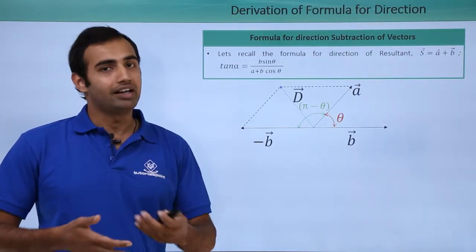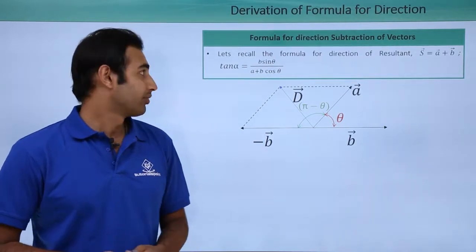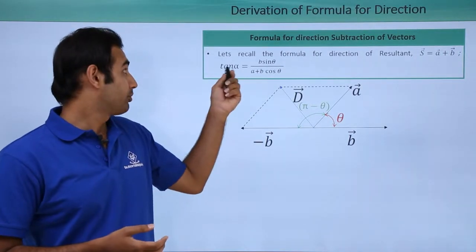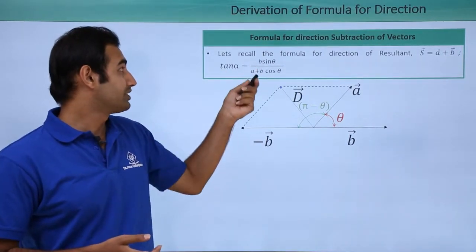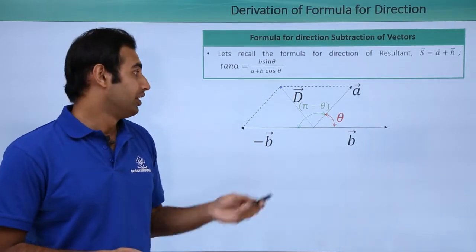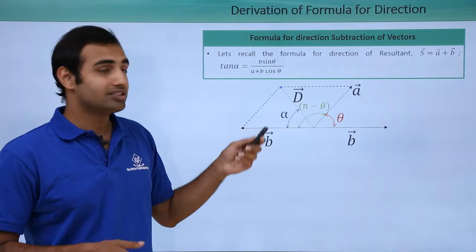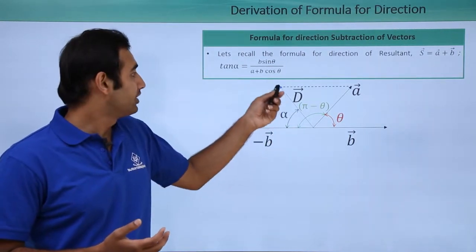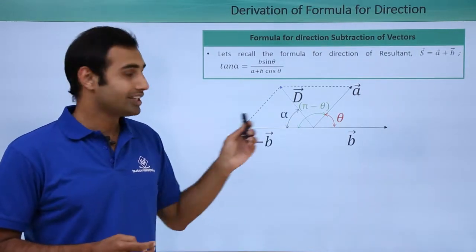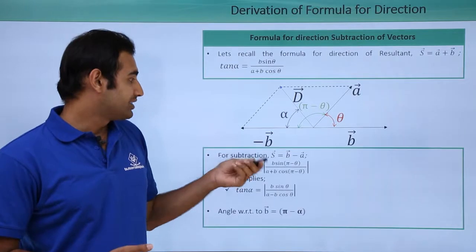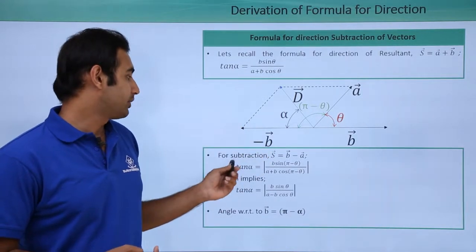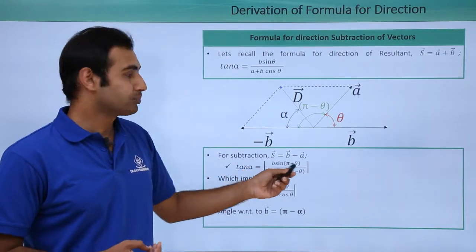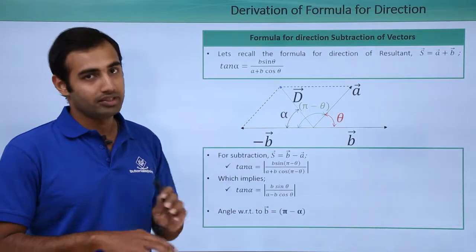Now let's talk about the direction of the resultant vector that comes out of subtraction. Once again, looking at the direction that we obtained when two vectors are added was given by tan α = (b sin θ)/(a + b cos θ). Now in this situation, the angle α can similarly be explained as this angle α between the resultant and the lower vector in this case, which is minus b. So I can basically say that if I have to interpret the angle, I can explain tan α as (b sin(π - θ))/(a + b cos(π - θ)) because once again magnitudes of a and b stay the same.